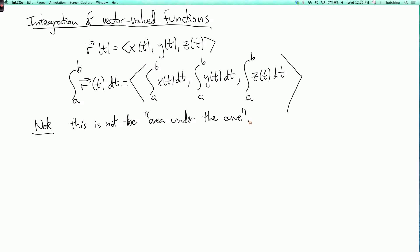So the most basic reason why it's not the area under the curve is that it's not even a number, it's a vector. Also, it's not clear in this context what exactly the area under the curve means.